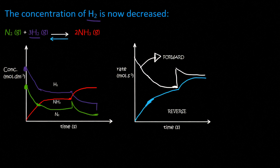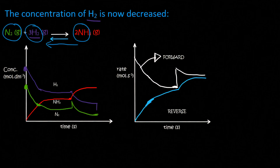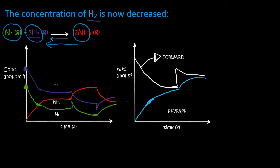Le Chatelier says that if you decrease the concentration of hydrogen, the system will react in such a way to make more hydrogen. So the reverse reaction is going to be favoured, causing nitrogen and hydrogen to increase, while the NH3 will decrease. We can see that the hydrogen dropped and then it increases. The nitrogen did not drop because we didn't add or take any away, but after that change the nitrogen starts increasing. And we can see that the ammonia, the NH3, dropped.